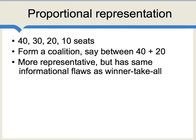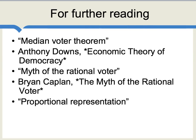Proportional representation is a more popular form of democracy in today's world. But when you look at the key flaws and problems with democracy — namely its informational flaws — proportional representation has pretty much the same problems as winner-take-all median voter systems. This is a big topic and we've just scratched the surface. Two very good classic books you could read are Anthony Downs' Economic Theory of Democracy and Bryan Caplan's The Myth of the Rational Voter.